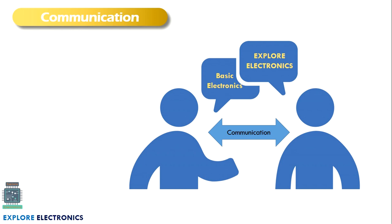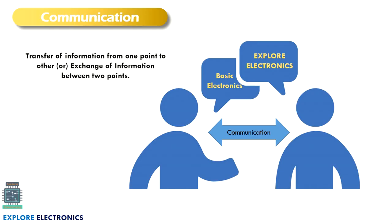In this picture, if you see, two persons are communicating with each other and sharing information about Explore Electronics and the Basic Electronics playlist. So this will be considered as communication. Here, what is the communication media? The two persons are very near, so one can hear the other, and that is sufficient. Communication means a transfer of information from one point to another point, or an exchange of information between two people.